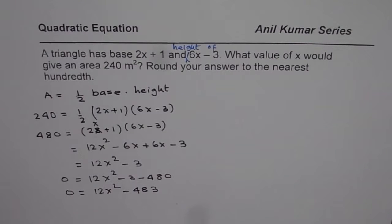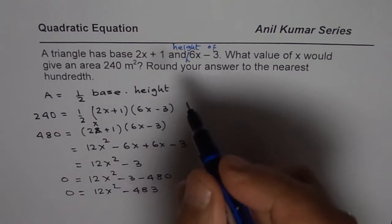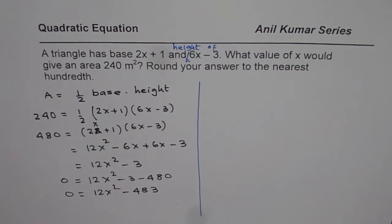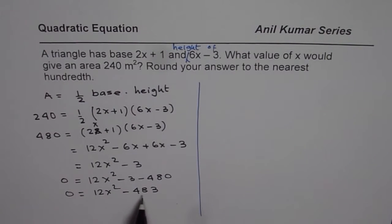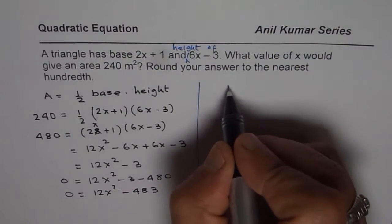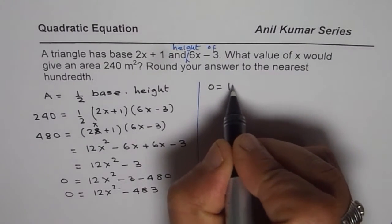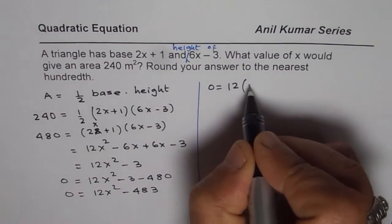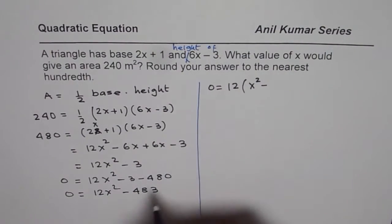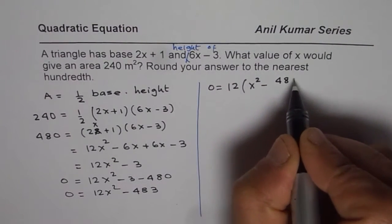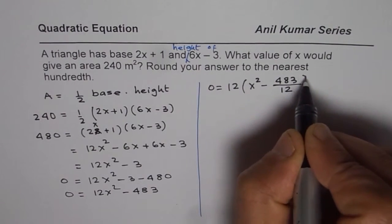That is the quadratic equation which you need to solve. Now we could factor 12 and solve it. That is one way of doing it. We could actually take square root of this and then solve it. So there are a couple of ways at this stage where we can solve this particular equation. Let us factor 12. We get x squared minus 483 divided by 12.